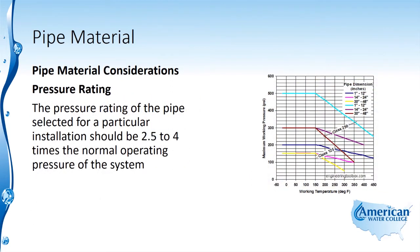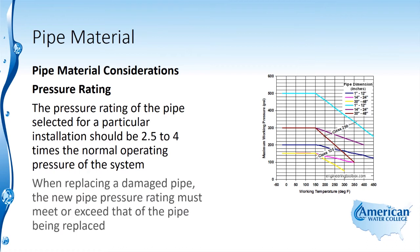The pressure rating of the pipe selected for a particular installation should be 2.5 to 4 times the normal operating pressure of the system. When replacing a damaged pipe, the new pipe pressure rating must meet or exceed that of the pipe being replaced.